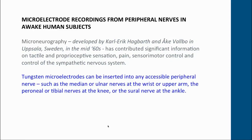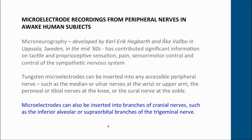Microelectrodes can be inserted into any accessible peripheral nerve, usually the median or ulnar nerves at the wrist or upper arm — useful for recording from tactile afferents and spindle afferents. The common peroneal or tibial nerves at the knee are typically used for recording from sympathetic activity. Interestingly, Japanese researchers favour the tibial nerve at the knee. Recordings have also been made at the sural nerve at the ankle, and in recent studies we've been recording from the posterior tibial nerve at the ankle, which allows us to record from muscle spindle endings in the intrinsic muscles of the foot and cutaneous afferents in the sole of the foot during standing. Microelectrodes can also be inserted into branches of cranial nerves, so they're not limited to just peripheral nerves.